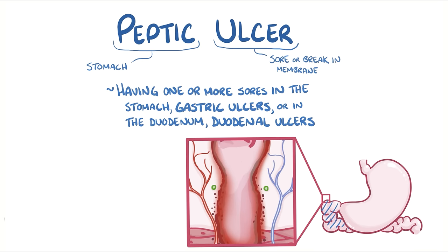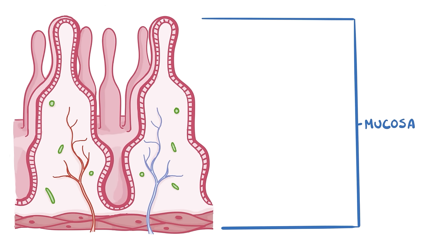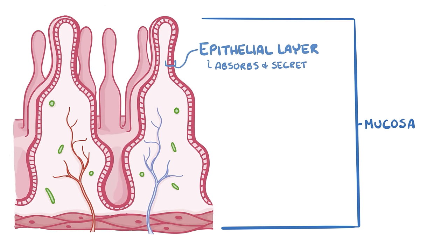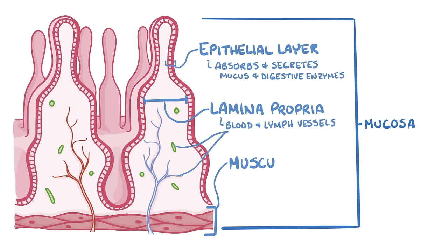Normally the inner wall of the entire gastrointestinal tract is lined with mucosa, which consists of three cell layers. The innermost layer is the epithelial layer, which absorbs and secretes mucus and digestive enzymes. The middle layer is the lamina propria, which has blood and lymph vessels. The outermost layer of the mucosa is the muscularis mucosa, a layer of smooth muscle that contracts and helps with the breakdown of food.